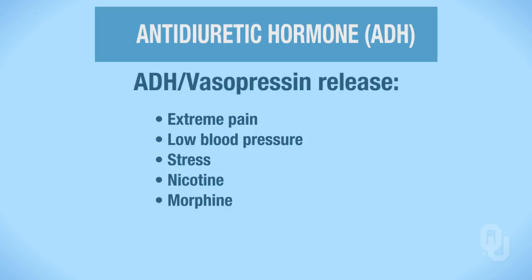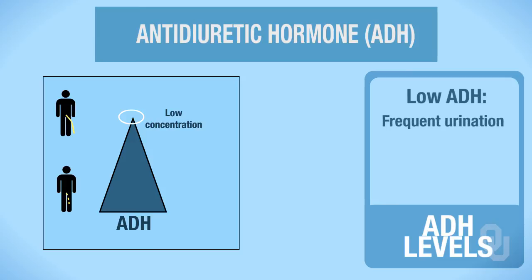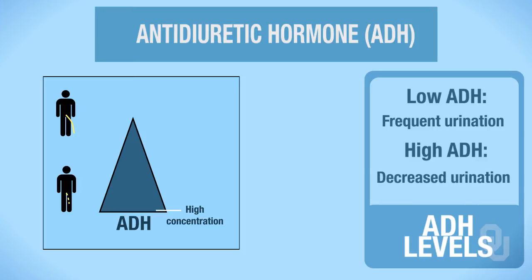Let's take a look at this diagram. At the top, a low concentration of ADH means you will urinate a lot. That is the opposite of having high ADH, as illustrated at the bottom of the triangle. So if you have high ADH, you will have decreased urination.